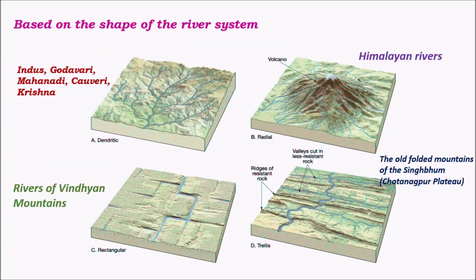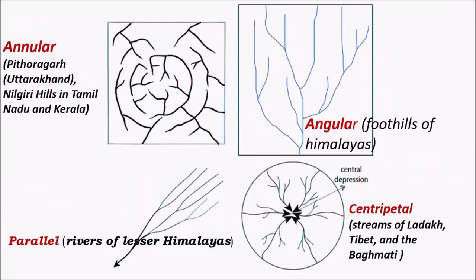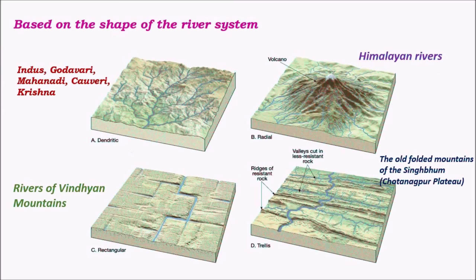Depending on the shape of rivers and how they join the main trunk, drainage systems are classified into dendritic, radial, rectangular, trellis, annular, angular, parallel, and centripetal patterns. In dendritic pattern, rivers and distributaries are arranged like branches of a tree; examples include Indus, Godavari, Mahanadi, Kaveri, and Krishna. In radial pattern, rivers emerge from a mountain peak or glacier and flow in different directions across the mountain slope, observed in the Himalayan mountains during the initial courses of rivers like Indus and Ganga.